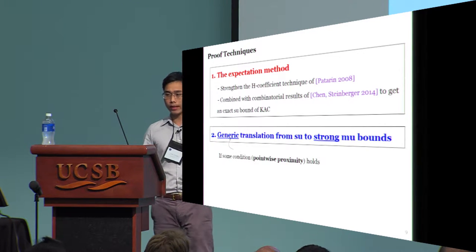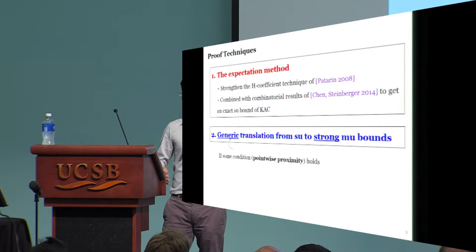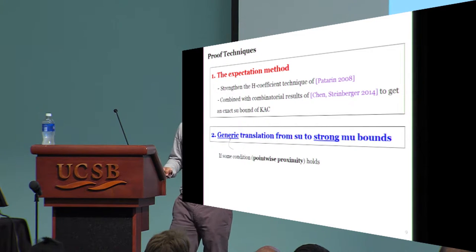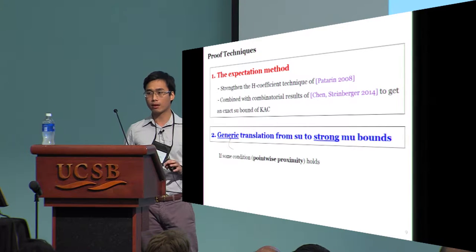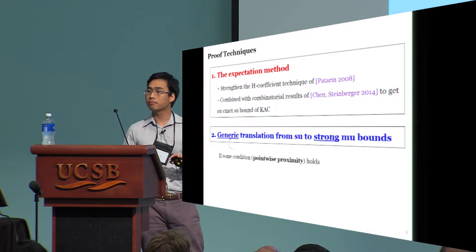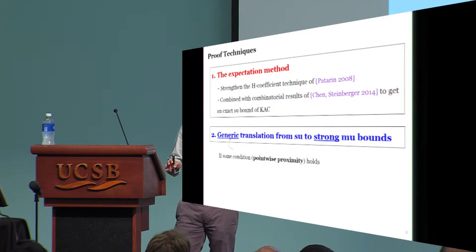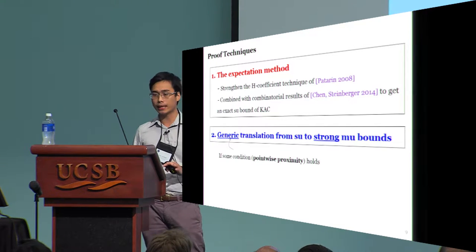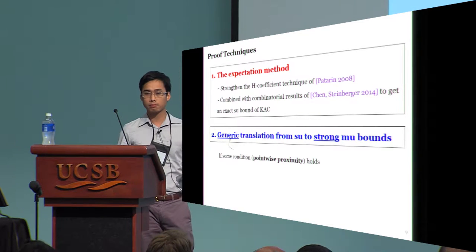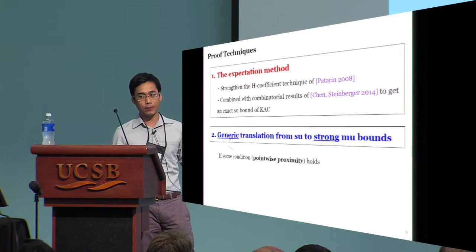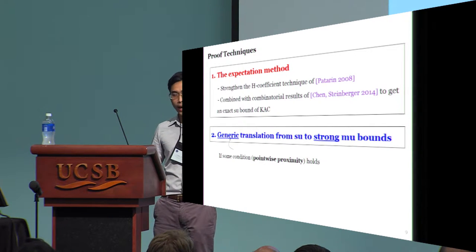If you want to have multi-user security, we give a generic translation from single to multi-user security with strong bounds. I stress that the translation is generic. It has nothing specific to KAC, but of course, because the translation is so powerful, it has to be conditional, otherwise there's no hope to beat the hybrid argument in all cases.